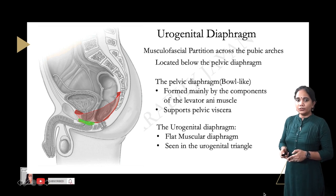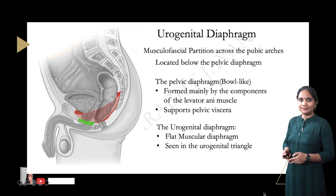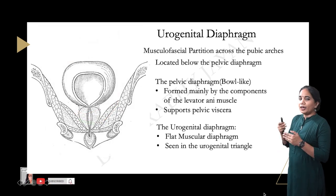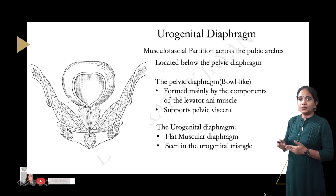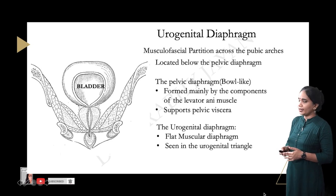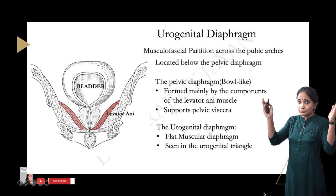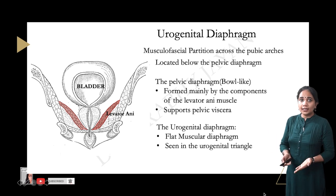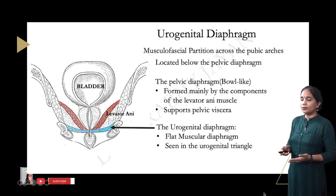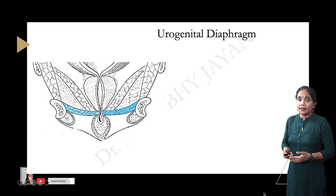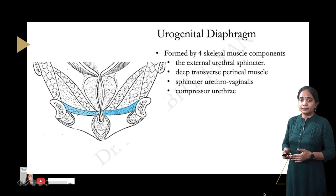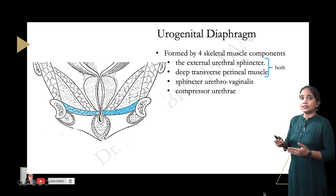The arrangement of the urogenital diaphragm is clearest in coronal section. We can see the bladder, the pelvic diaphragm sloping down giving it its bowl-like appearance formed by the levator ani, and below that, highlighted in blue, is the flat urogenital diaphragm. Being a muscular diaphragm, the urogenital diaphragm has a superior fascia and an inferior fascia.